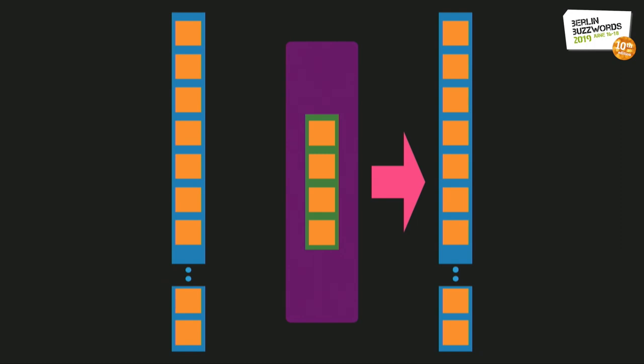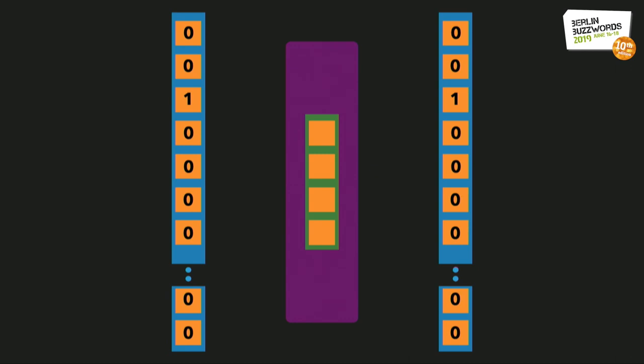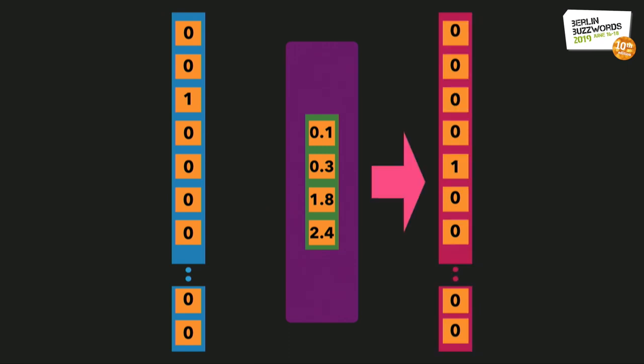With Word2Vec specifically, the high-dimensional representation of a word is a one-hot encoding—a vector as big as our dictionary, with zeros everywhere except for a one in the component corresponding to our word. This is then transformed down to a much smaller vector using an encoder-decoder-like process. But instead of trying to predict the one-hot encoding of the original word, we predict the one-hot encodings of the words surrounding it in the text.